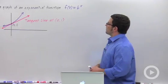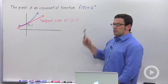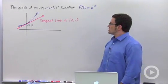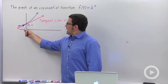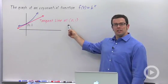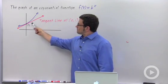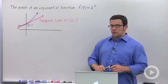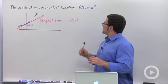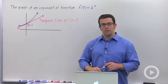So I've drawn a picture here, the graph of an arbitrary exponential function f(x) equals b to the x. That's this graph in purple. And I've also drawn its tangent line at the point (0,1). Now what I'd like to do is explore the relationship between the base b and the slope of the tangent line.